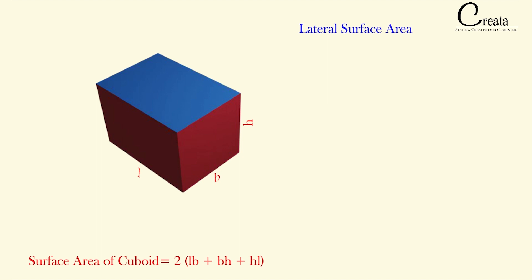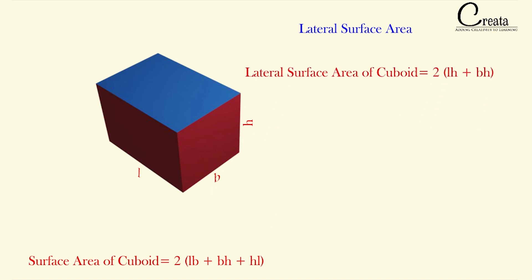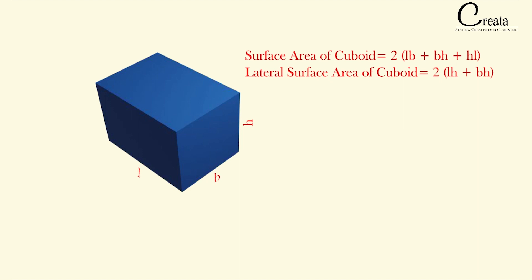Let's take only the area of the lateral faces. We got 2(LH) + 2(BH), so the lateral surface area is 2(LH + BH). This is the formula of the lateral surface area of the cuboid. There is no need to memorize this formula — just know the basic concept of what is surface area and what is lateral surface area.